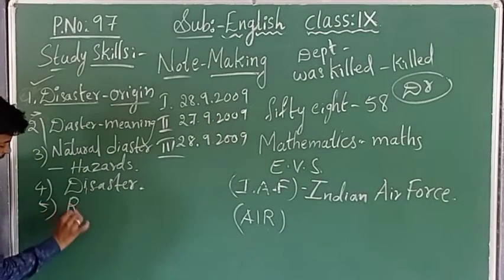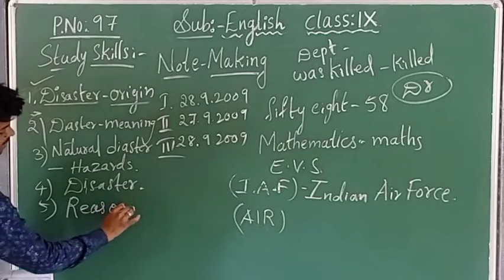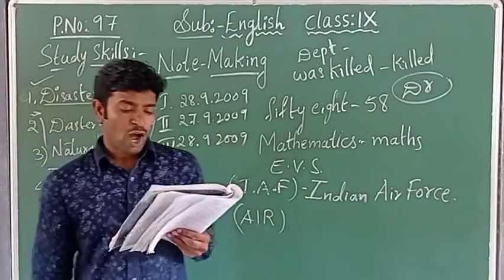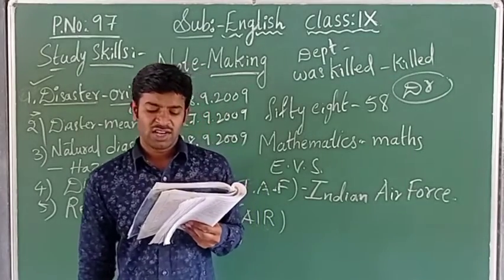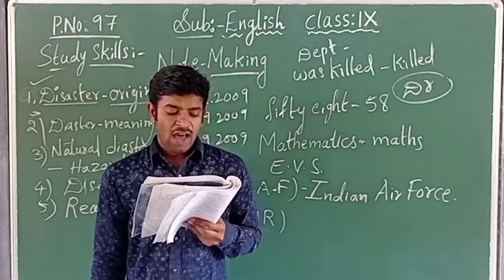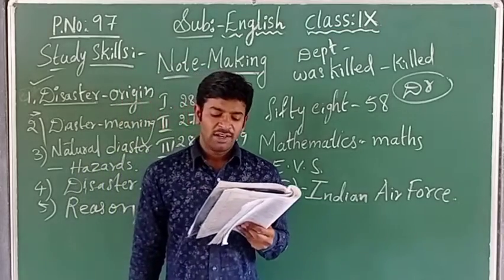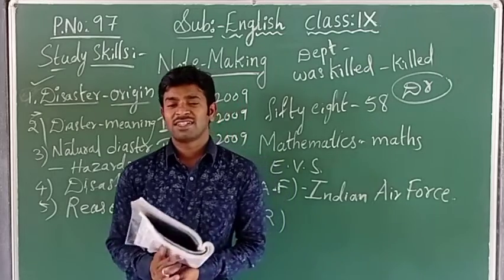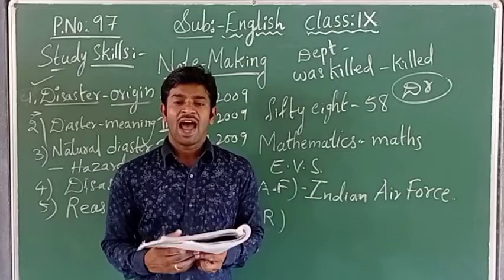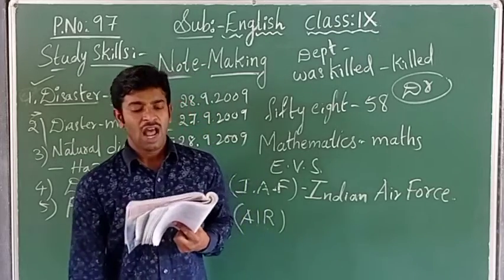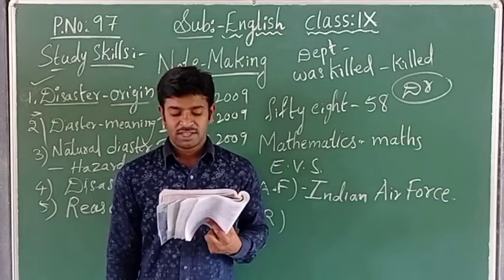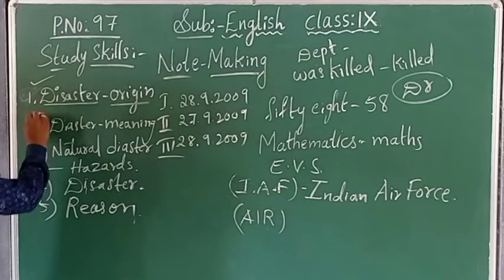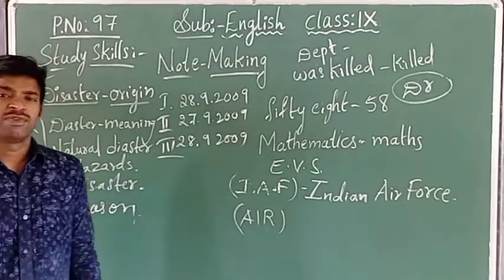Fifth note point: reasons for occurrence of disaster. Disasters are due to tropical climate, unstable landforms, deforestation and non-engineered construction. These are the reasons for disaster. From the passage, we have taken five note points — including the reasons.